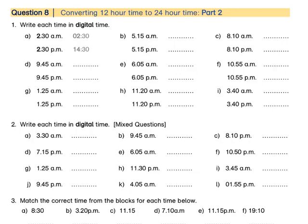Directly beneath it, we have 2:30 PM. This means it is in the afternoon, much later on in the day. In digital time, we keep counting on from 12 o'clock noon. So for PM, remember: plus 12 hours. 2 plus 12 is 14 hours. So 14 hours and 30 minutes of the day have passed.